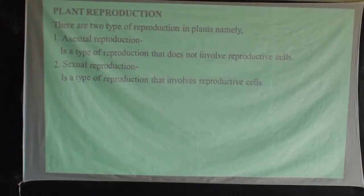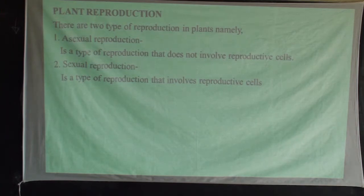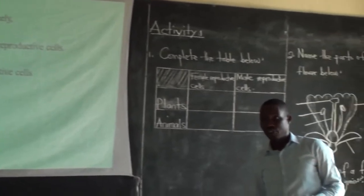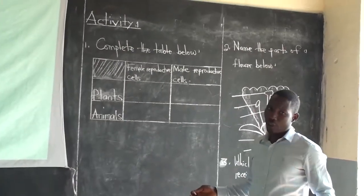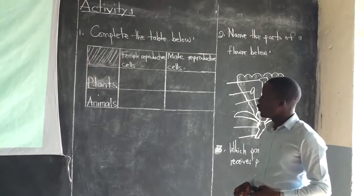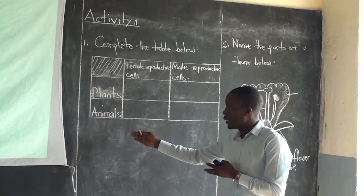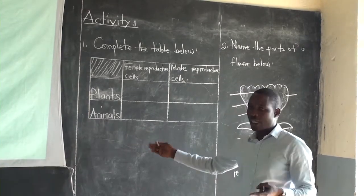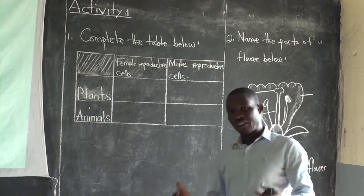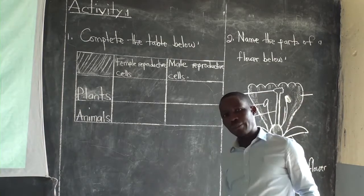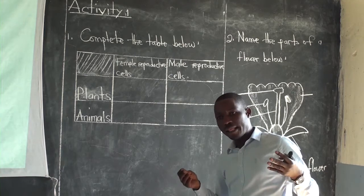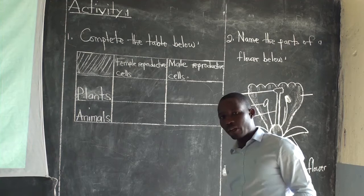You can be given an activity and asked to complete the table below. In this table, we want to compare sexual reproduction in plants and animals — we see which are the reproductive cells. On one side we have plants and on the other animals. We have female reproductive cells and male reproductive cells for both plants and animals. Reproductive cells are also called gametes, so you can have the male gametes and female gametes.